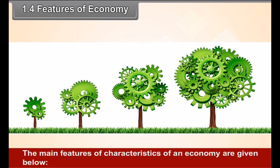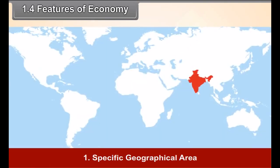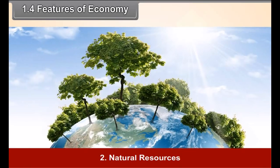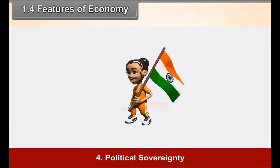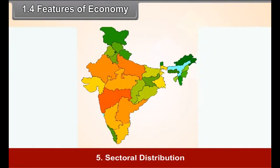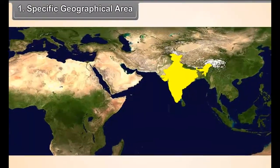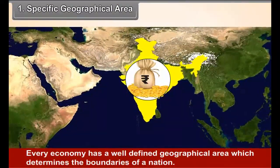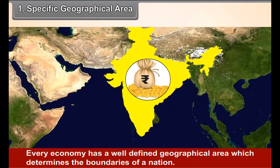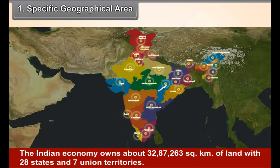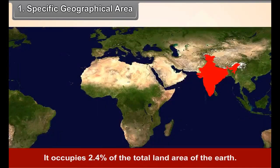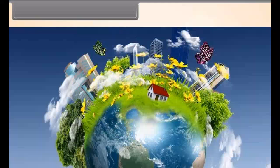1.4 Features of Economy. The main features or characteristics of an economy are: 1. Specific Geographical Area, 2. Natural Resources, 3. Population, 4. Political Sovereignty, 5. Sectoral Distribution. Every economy has a well-defined geographical area which determines the boundaries of a nation. The Indian economy owns about 32,87,263 km² of land with 28 states and 7 Union territories.